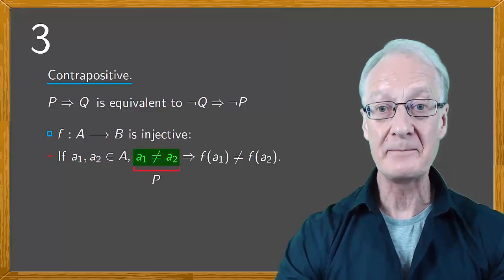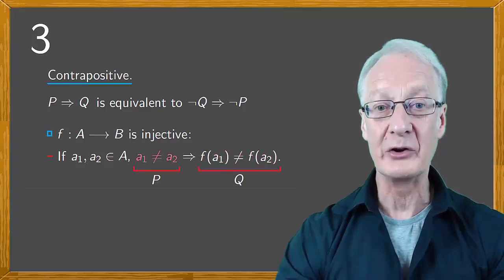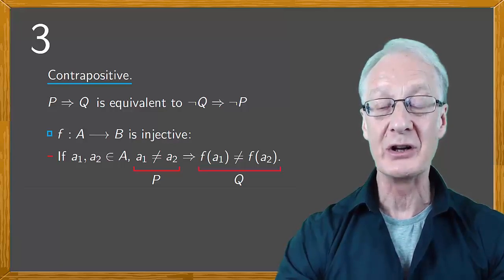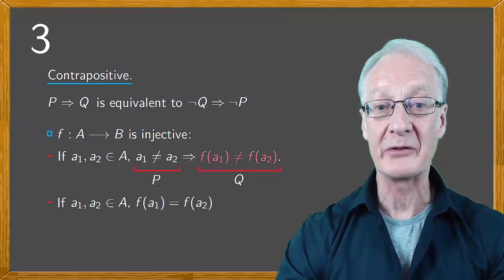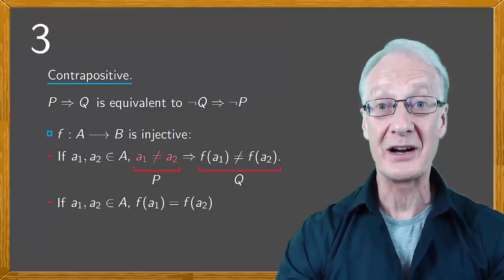If this is P and this is Q, the above is equivalent to NOT Q implies NOT P. Therefore, a map is also injective if it meets the condition NOT Q, if two elements have the same image, then NOT P. Those elements are the same.